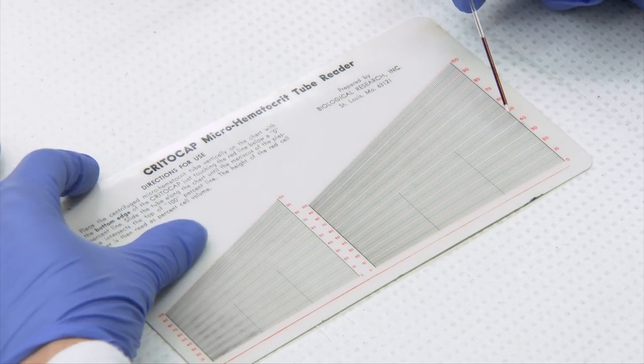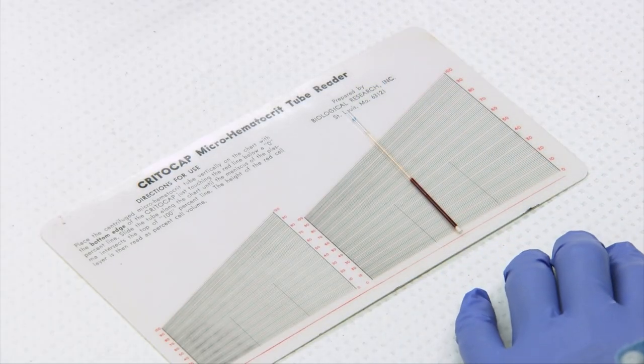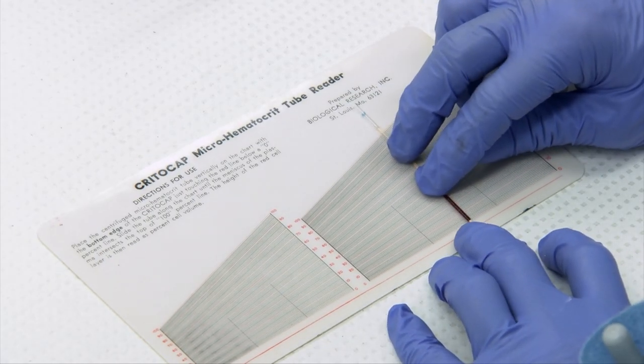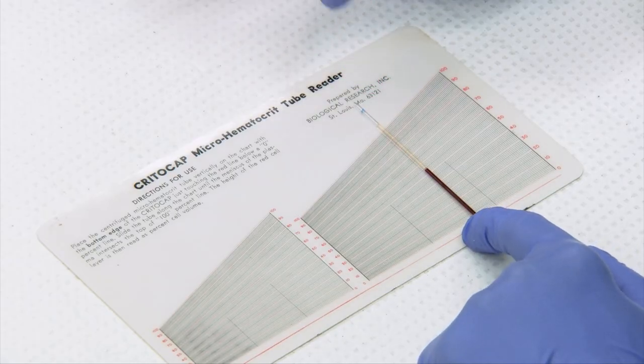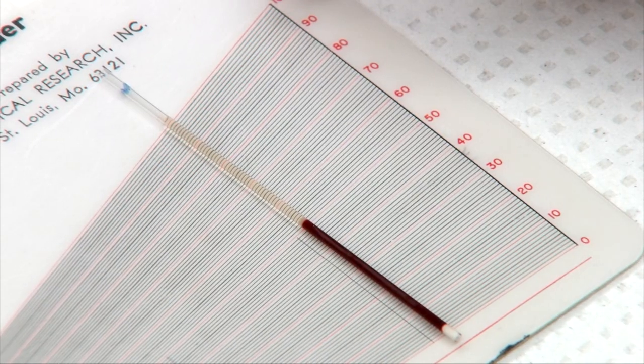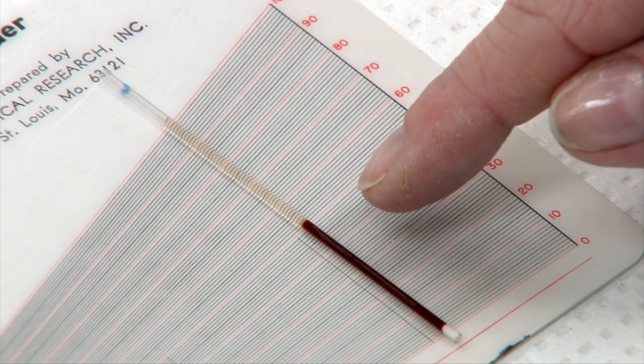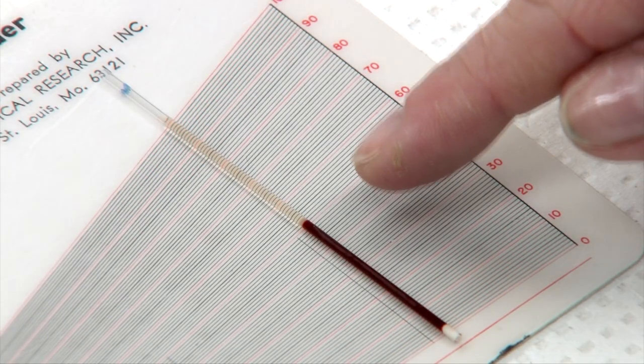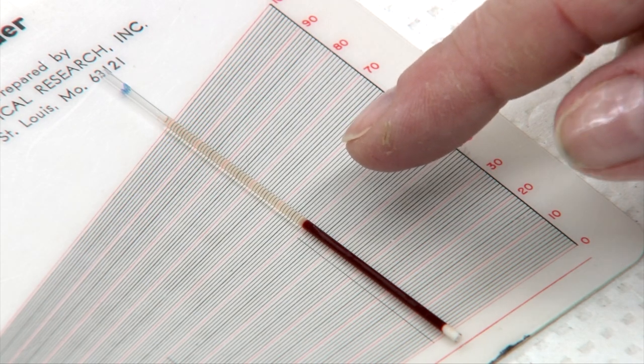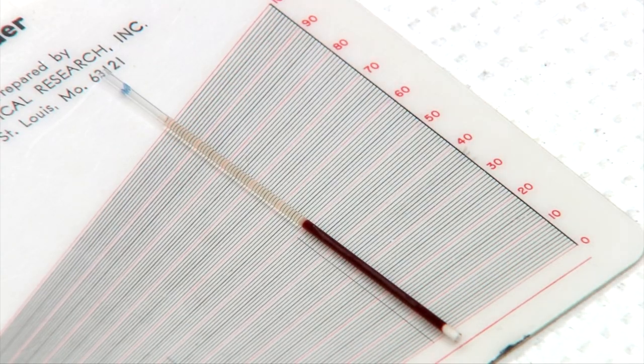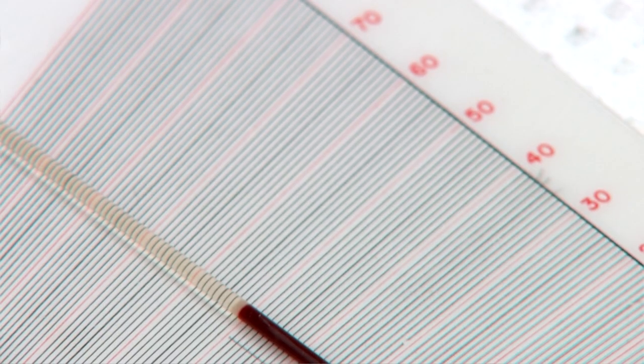The packed cell volume is determined using a reader. You put the interface of the plasticine and the blood at the bottom of the red line where it says zero. You put the interface of the plasma and air at the top where it says 100. Then you move down to find where the top of the red cell layer lies. You always want to read your packed cell volume underneath the buffy coat. The size of the buffy coat will vary depending upon the white blood cell count and the platelet count. In this case, your packed cell volume is 50% or 0.50 liters per liter.